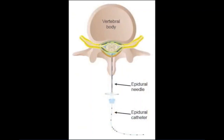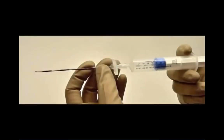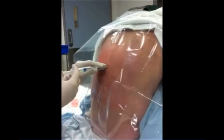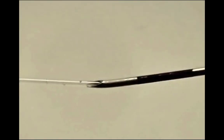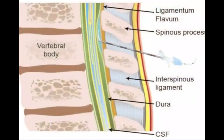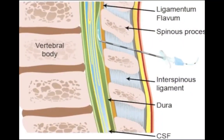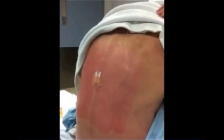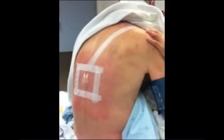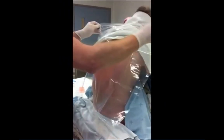The epidural space is identified immediately after advancing the needle through the ligamentum flavum using a loss of resistance to air or saline technique. In an adult, the epidural space is typically entered between 4 to 6 cm from the skin. Once the space is identified, an epidural catheter is commonly passed through the needle into the epidural space. The catheter is then left in the epidural space and the needle is removed. Local anesthetics with or without opioids are then injected through the epidural catheter, permitting a slow titration of the local anesthetic drug. Intermittent aspiration is performed to ensure that the epidural catheter has not inadvertently entered a blood vessel or the spinal fluid.